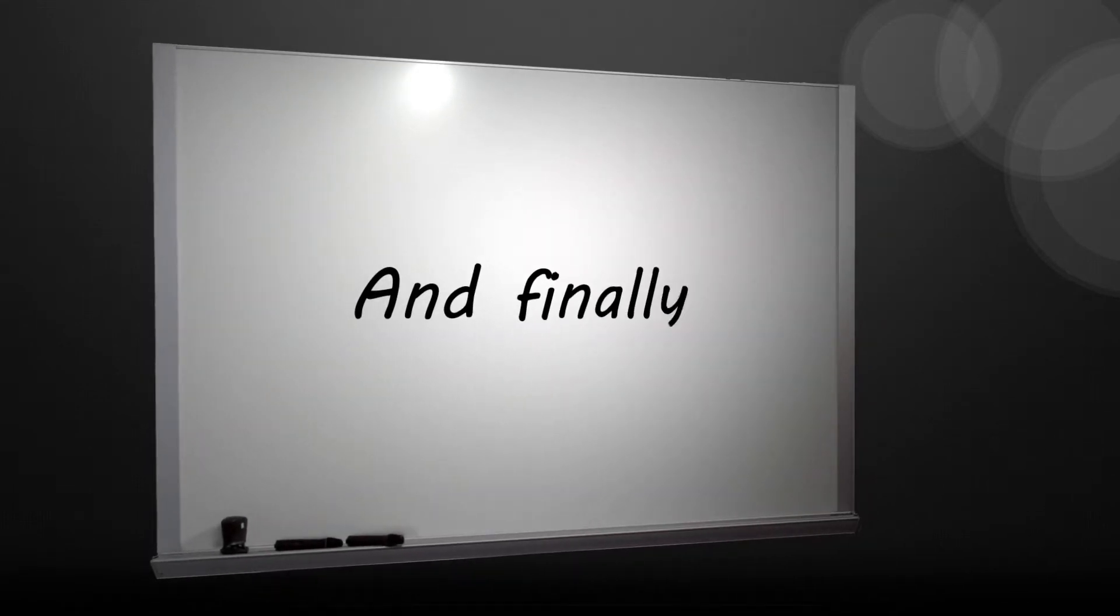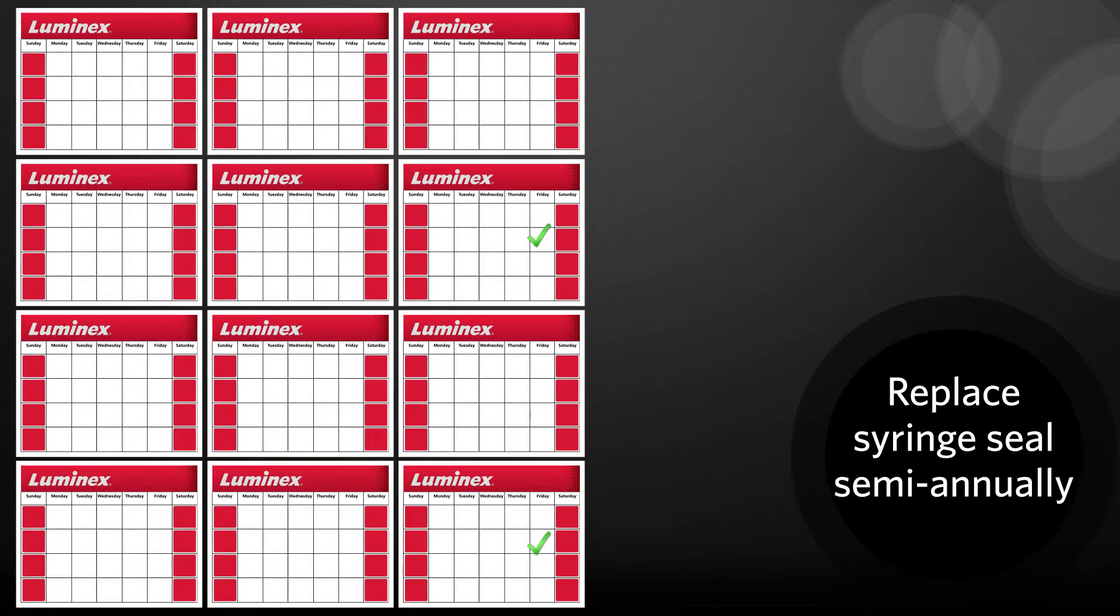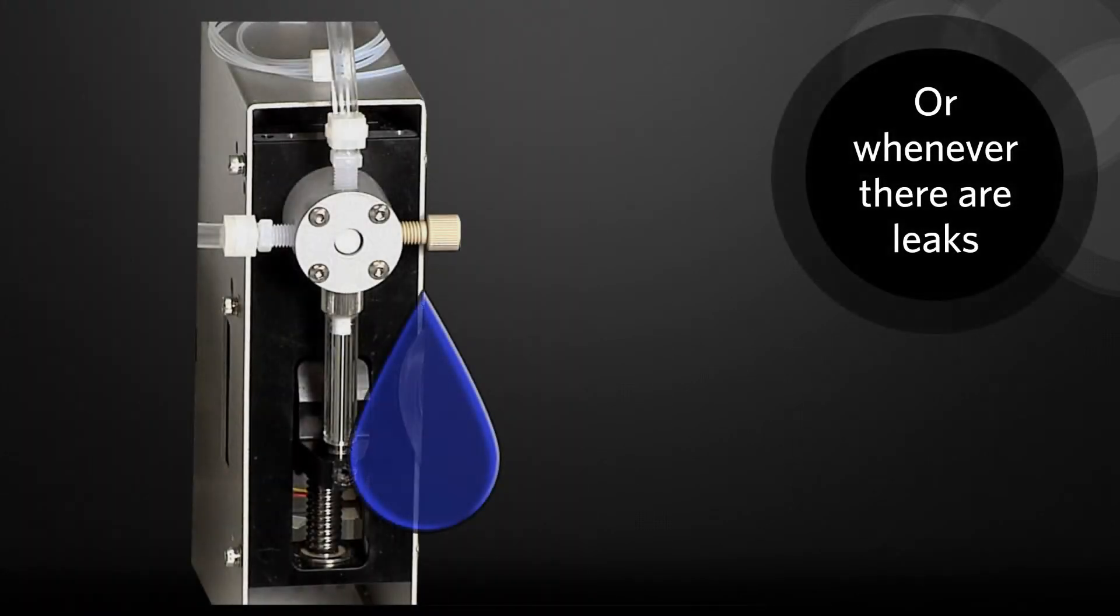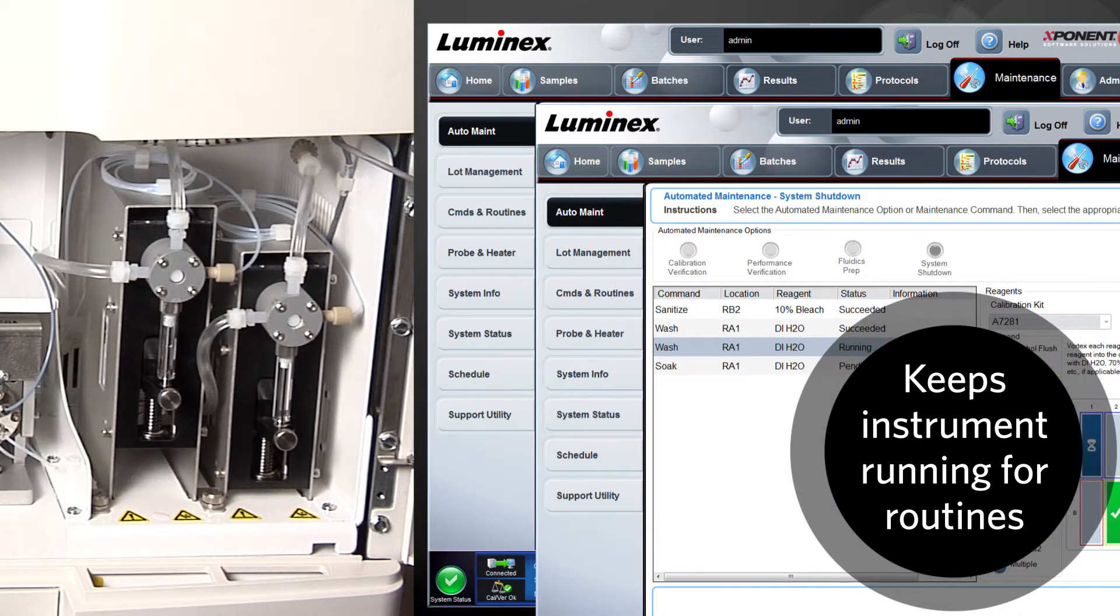And finally, remember to change the syringe seal as part of your semi-annual maintenance, or when there is a leak. Properly working syringe pumps keep the FlexMap 3D instrument working for all commands and routines.